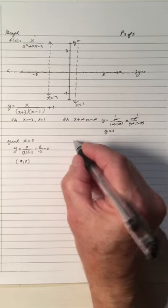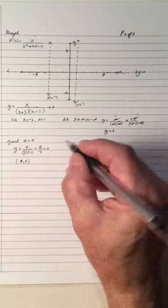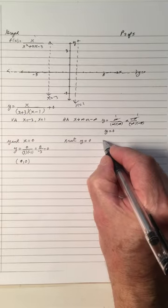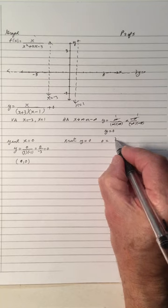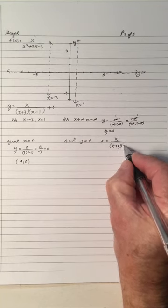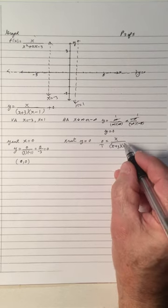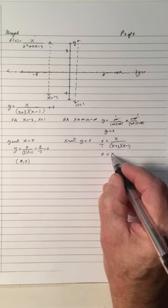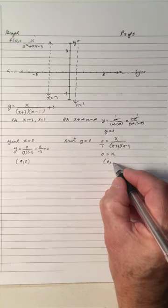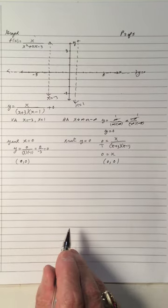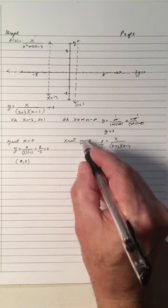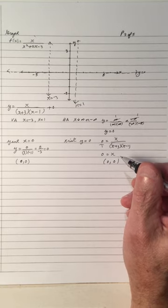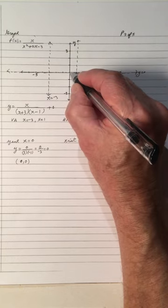The y-intercept and x-intercept are both at 0. But to check for more x-intercepts, let y equal 0. Setting 0 equal to the equation and cross-multiplying, 0 times the denominator is 0, and 1 times x is x. So when y is 0, x is 0 — the same result. However, it could have two x-intercepts depending on the rational function.